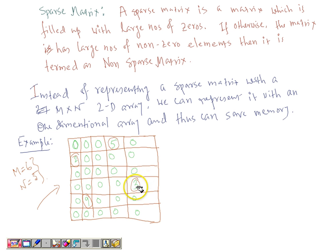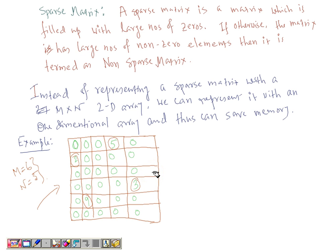In order to represent such a matrix in computer memory, the traditional data structure could be a 2D array. But since most of the elements are zero, we can represent this sparse matrix with a one-dimensional array, and that can save us a lot of memory.